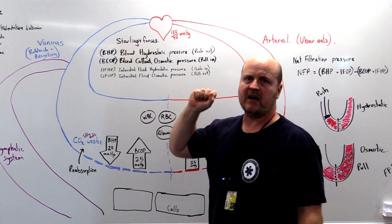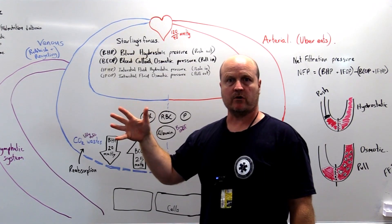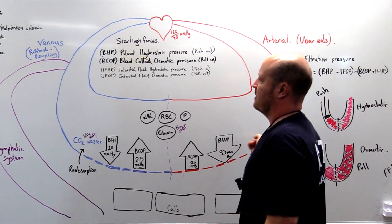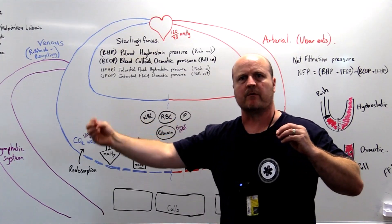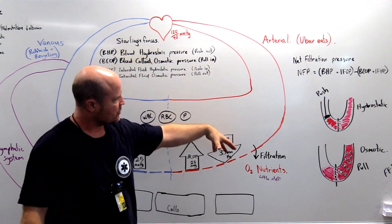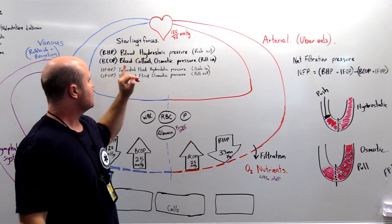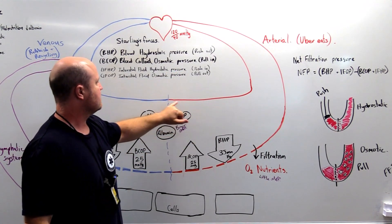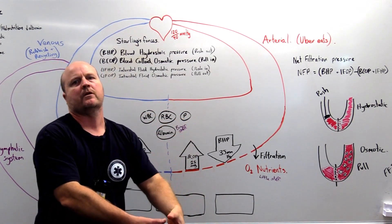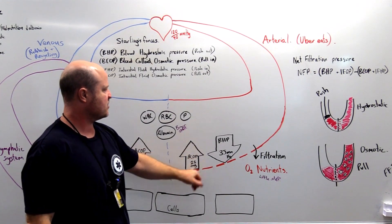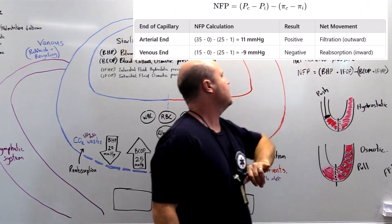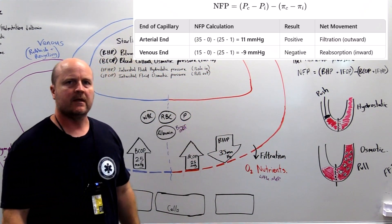When the heart contracts, we shoot out 120 mmHg of force right there in the artery. But by the time the artery turns into the arteriole and eventually gets to the capillary end, that force has dropped because it's so far away from the pump. Now the blood hydrostatic pressure is probably closer to 35 — that is the hydrostatic pressure pushing out. Our blood colloid osmotic pressure is about 25, from the big stuff in our capillaries. So at our arterial end, the net filtration pressure will be maybe 10 mmHg leaving.